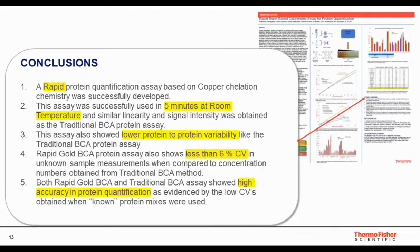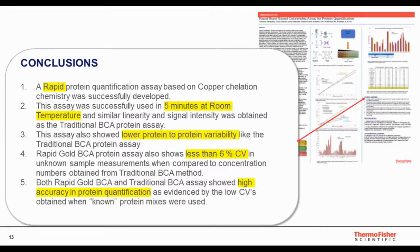In conclusion, the rapid copper chelation assay was developed. Five minutes at room temperature is sufficient to get good signal intensity with excellent linearity. Low protein-to-protein variability is seen with the new assay, and there is agreement in concentration values between the Rapid Gold BCA and traditional BCA. In addition, this is a highly accurate assay. Thank you very much.